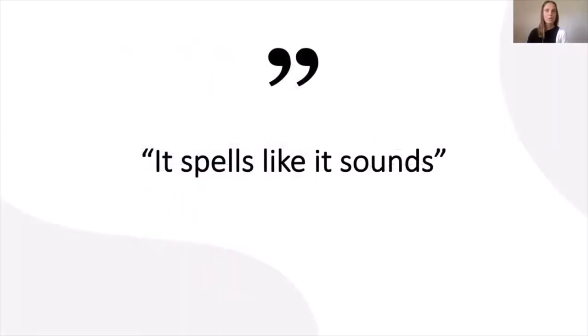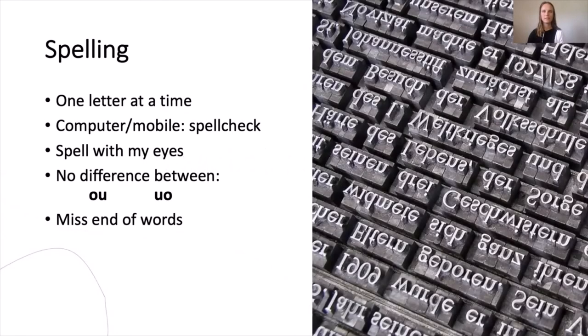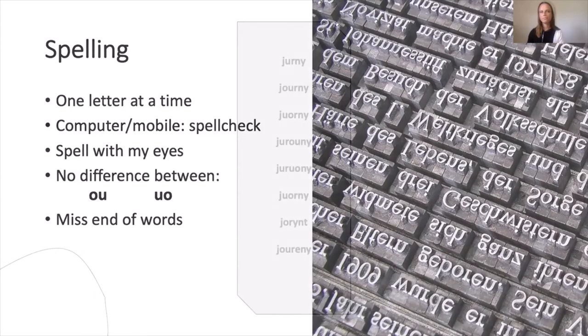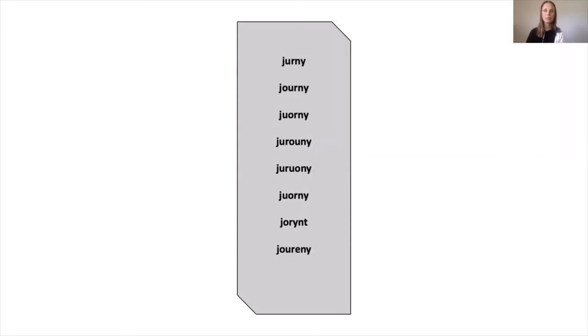If I ask someone how a word is spelled and they answer it's spelled like it sounds, it's not helpful for me. I need one letter at a time. I find spelling tricky. But with a computer or a mobile with spellcheck, it's not that tricky anymore. I would say that I spell with my eyes. I remember a word like a picture. But I find it hard to see the difference between O and U. And I often miss the end of a word. Here is an example when I'm trying to spell the word journey. I started at the top and changed it until it felt correct. But without a spelling program, I'm not sure. Can you see if I got it right?